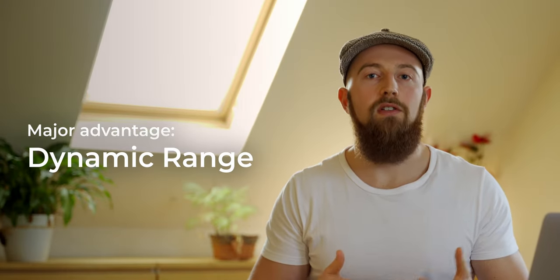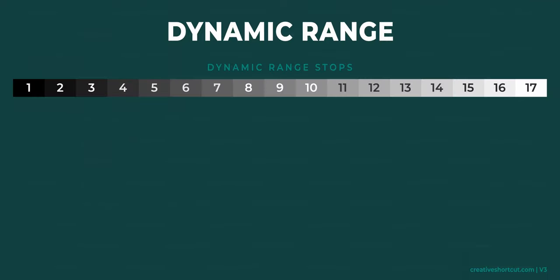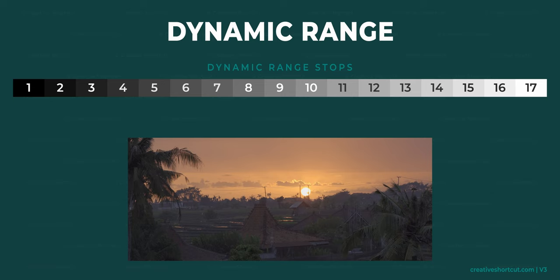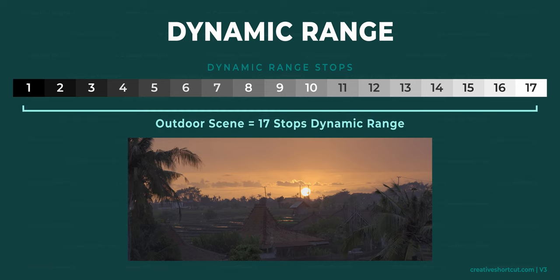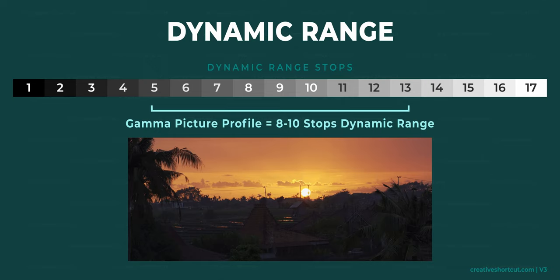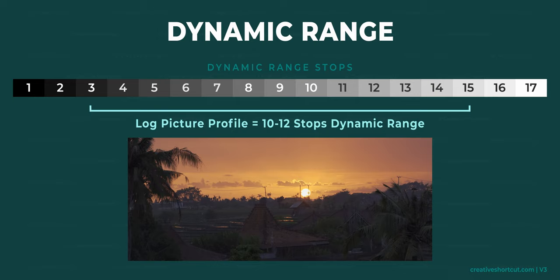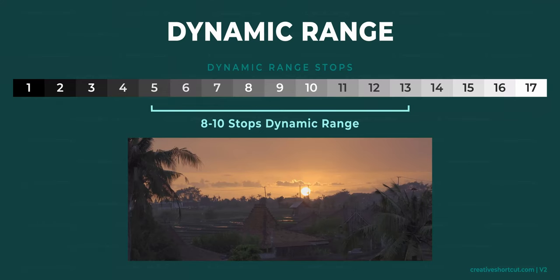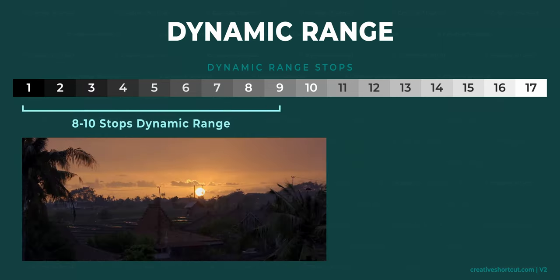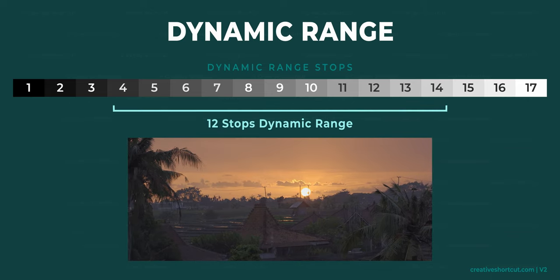Dynamic range is the range of brightness that your camera can record, defined by stops. A bright outside landscape shot can require around 17 stops to perfectly capture the detail in both the bright highlights and the dark shadows. Our eyes can manage this, but most cameras are far off achieving it. In gamma format, an average mirrorless camera achieves about 8–10 stops of dynamic range, whereas log formats can push that same camera to around 10–12 stops. Shooting with higher dynamic range means you can capture more dark and bright details simultaneously, whereas with lower dynamic range you have to choose if you want the bright parts blown out or your shadows crushed.